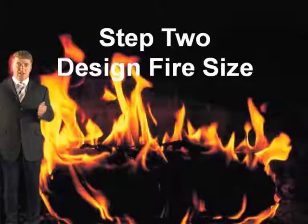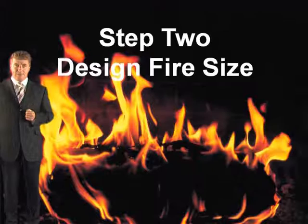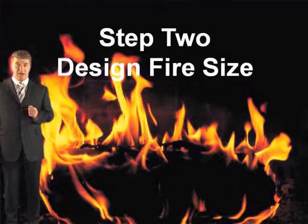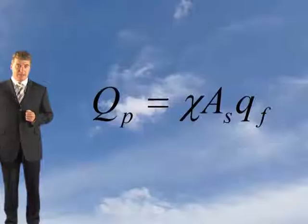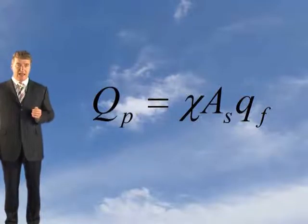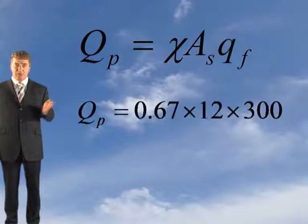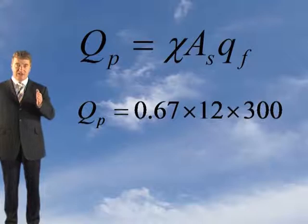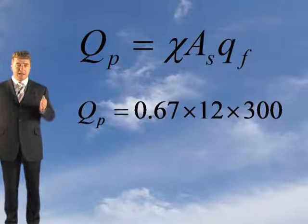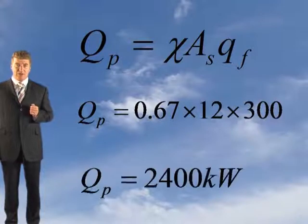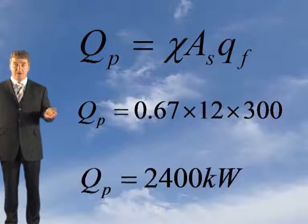Step two is to determine the design fire size. The formula to determine the fire size based on the information provided is: QP equals chi times AS times a QF. In this case, QP equals 0.67, which is the default value for most things giving off that same convective heat output. Times 3 by 4 is 12 times 300, which gives you a design fire size of 2,400 kilowatts or 2.4 megawatts. That covers step two.